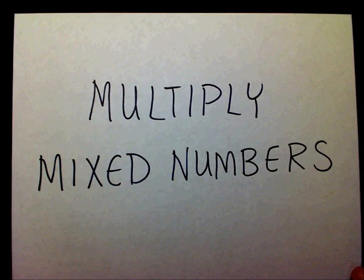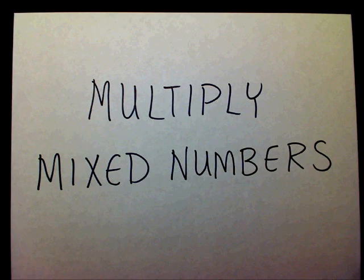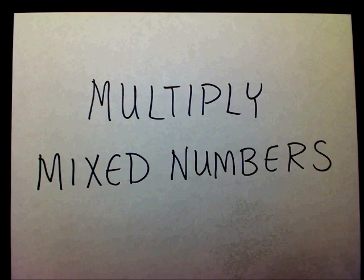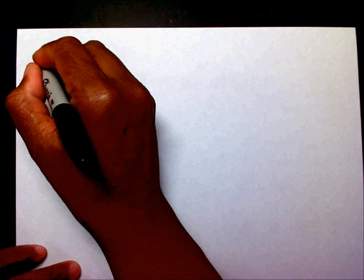Today we're going to multiply mixed numbers, but before we get started, I want to review some things. In order to multiply mixed numbers, you need to be able to do a couple of things. First of all, you need to be able to change a mixed number into an improper fraction.